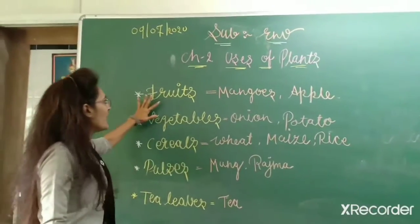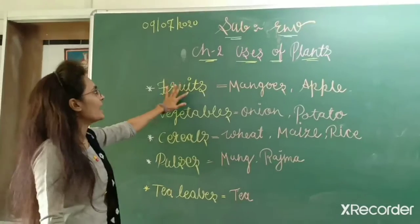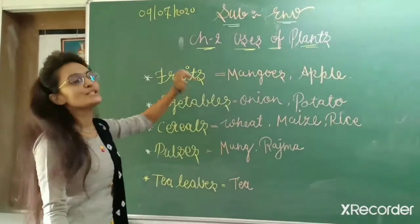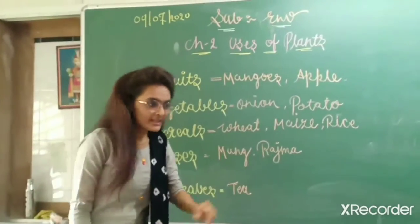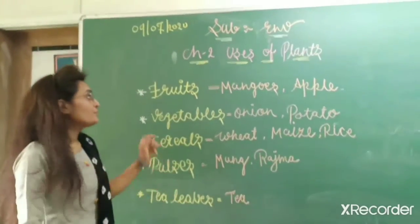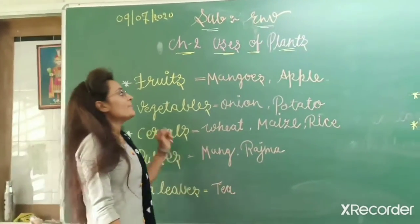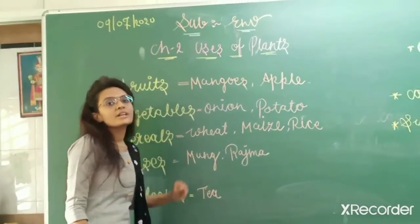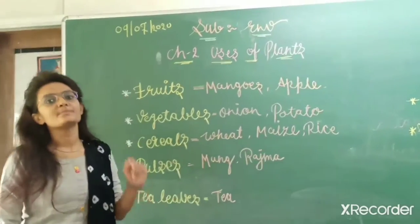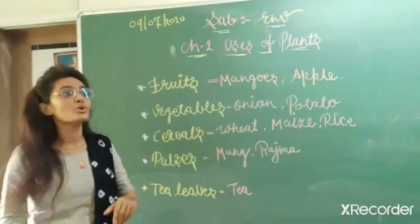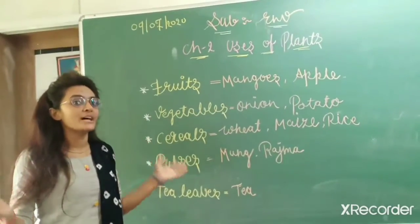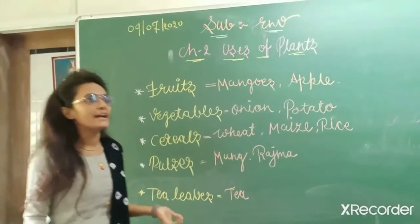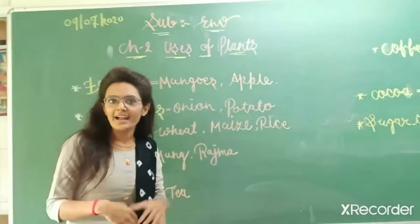Now first is fruits. In fruits we have mangoes, apples, bananas — so many fruits that we get from plants.